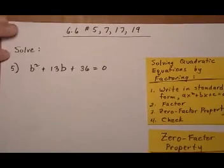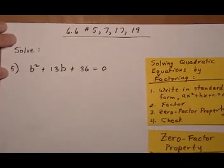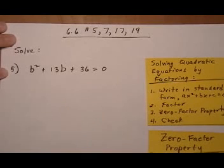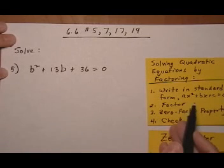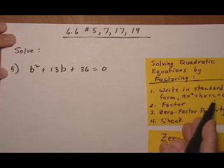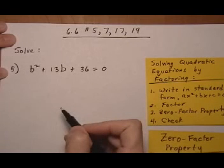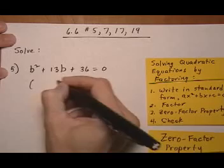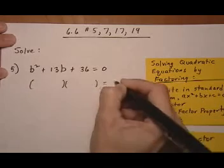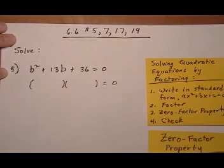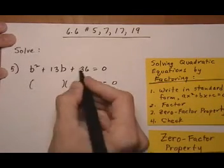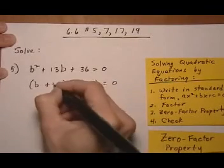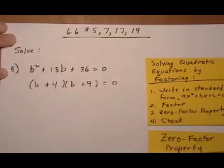Let's start with number five: b squared plus 13b plus 36 equals zero. The first thing we want to do is get it in the ax squared plus bx plus c equals zero form — well, this one already is, so step one is already done. Next thing we do is factor. It's a trinomial, so it's going to be binomial factors. We want factors of 36 that add up to 13, so we'll use plus 4 and plus 9.